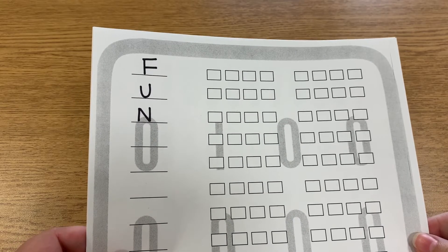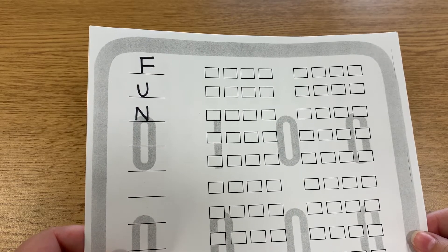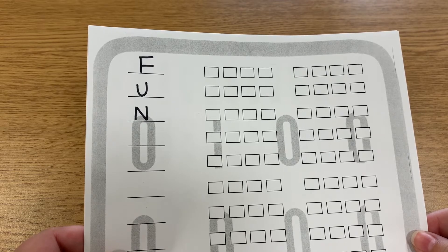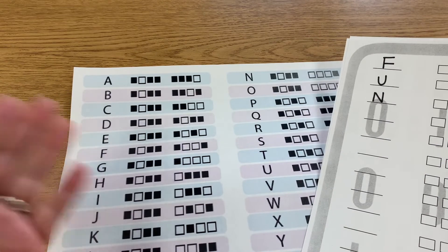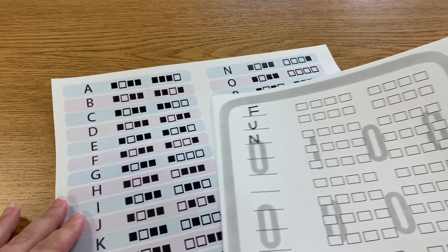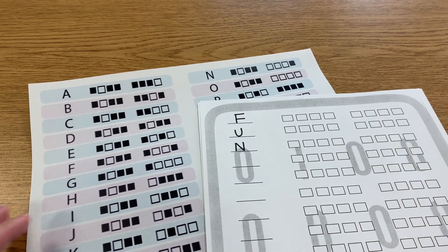First, you're going to need to pick what word you want to spell in binary code. For this one, I am going to spell fun. Next, I am going to grab the binary code key so that I know what the patterns look like for my selected word.